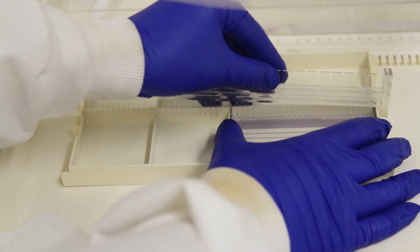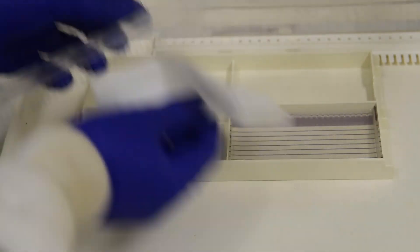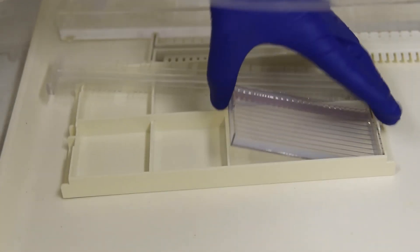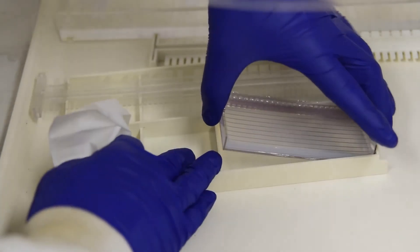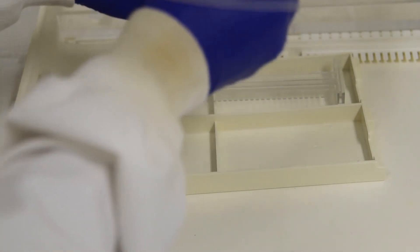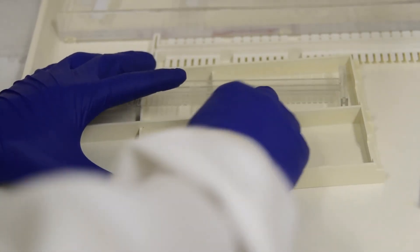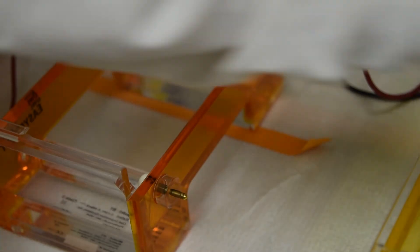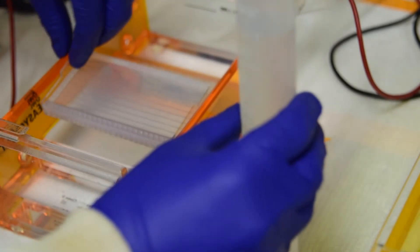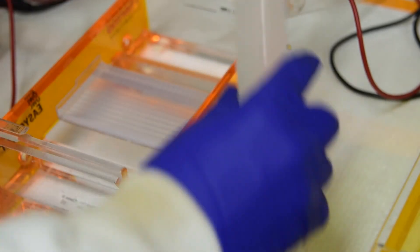Remove the gel from the mold and clean the comb, mold, and outside of the tray. Place the gel in the gel tank in the right orientation, walls away from you, and add 0.5x TAE to cover the gel.